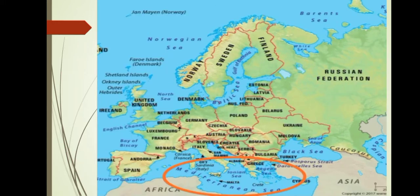Towards its south, the Mediterranean Sea forms the boundary of Europe. It separates North Africa from the southern part of Europe. It is called the Mediterranean Sea because it lies in the center of the world.